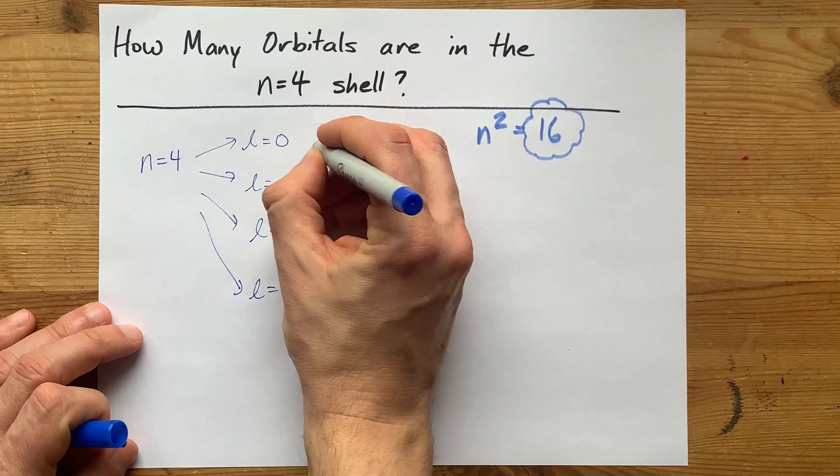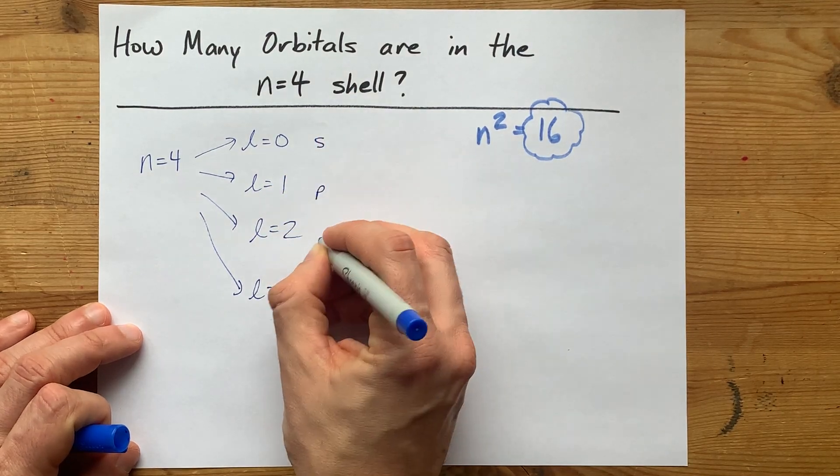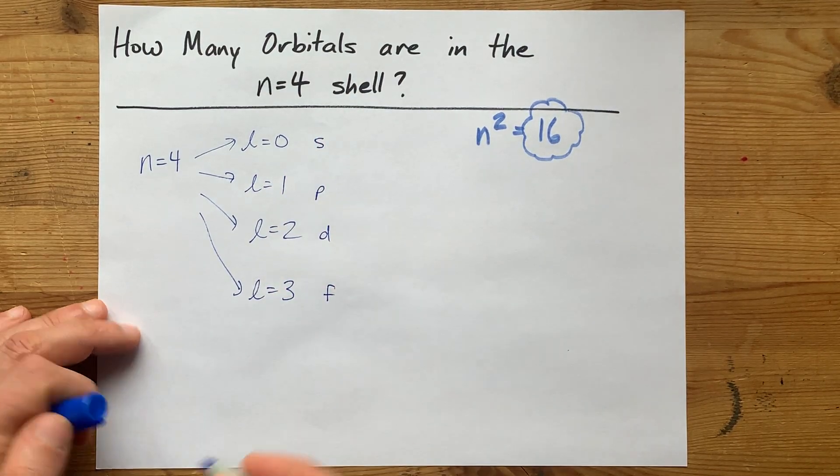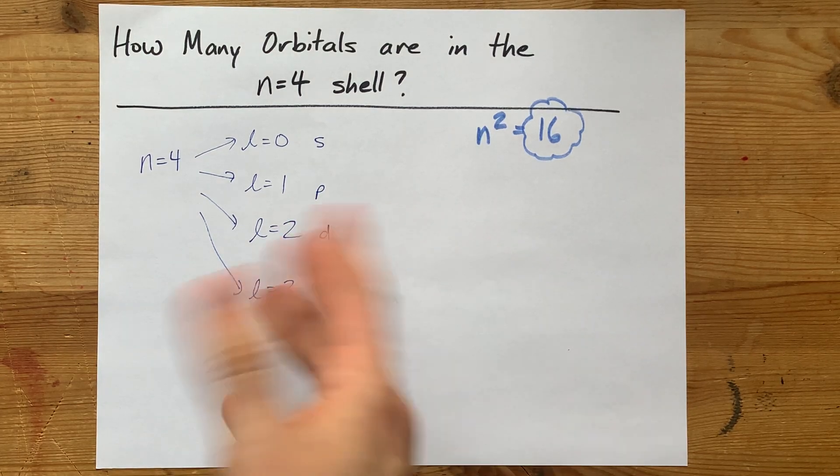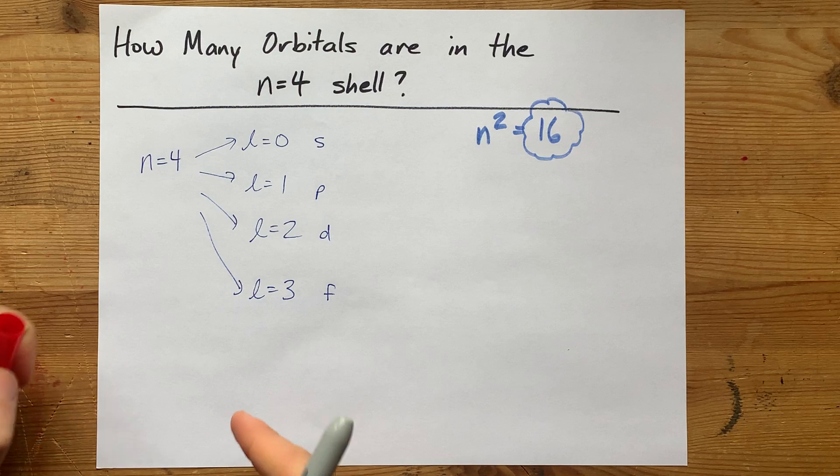Now, you might know these as the s, p, d, and f sub-shells. Now, you may already know how many orbitals are in each of those sub-shells. But if you don't,